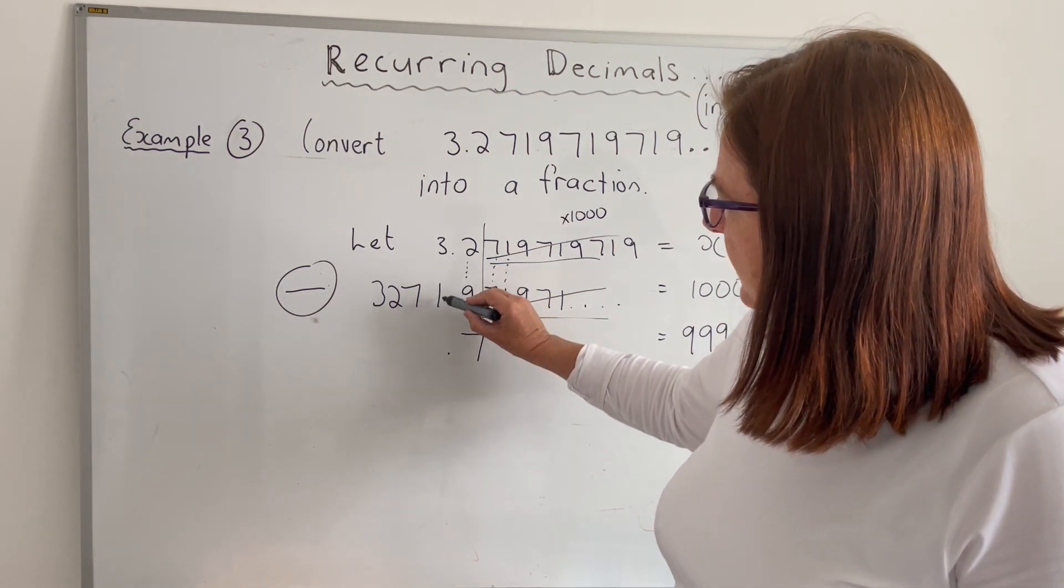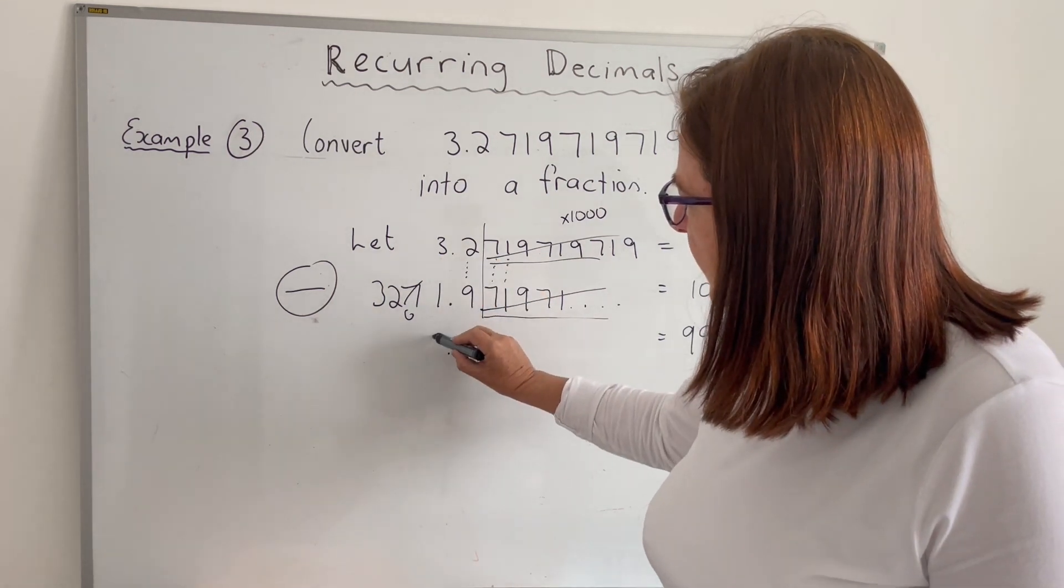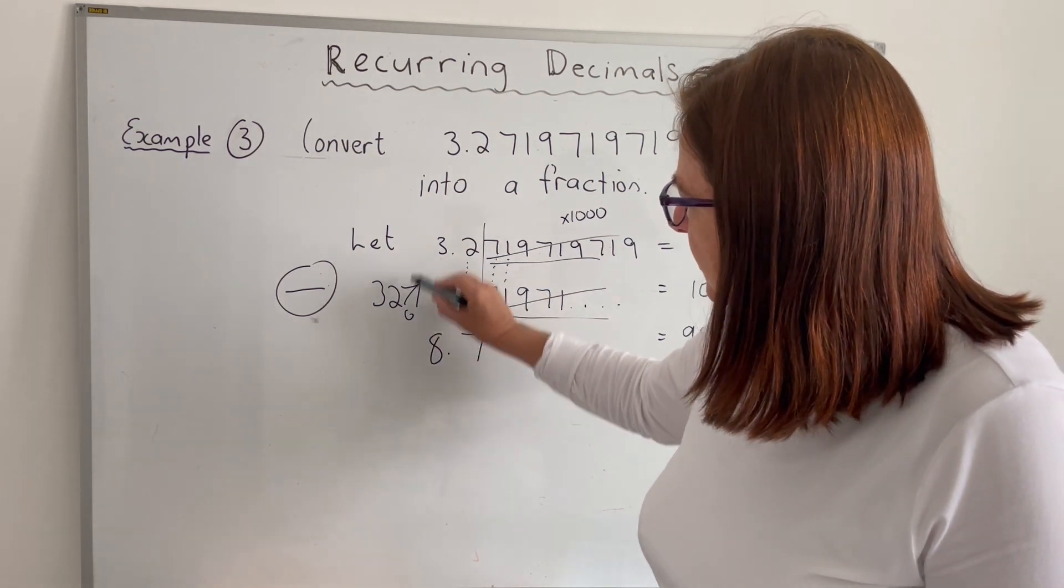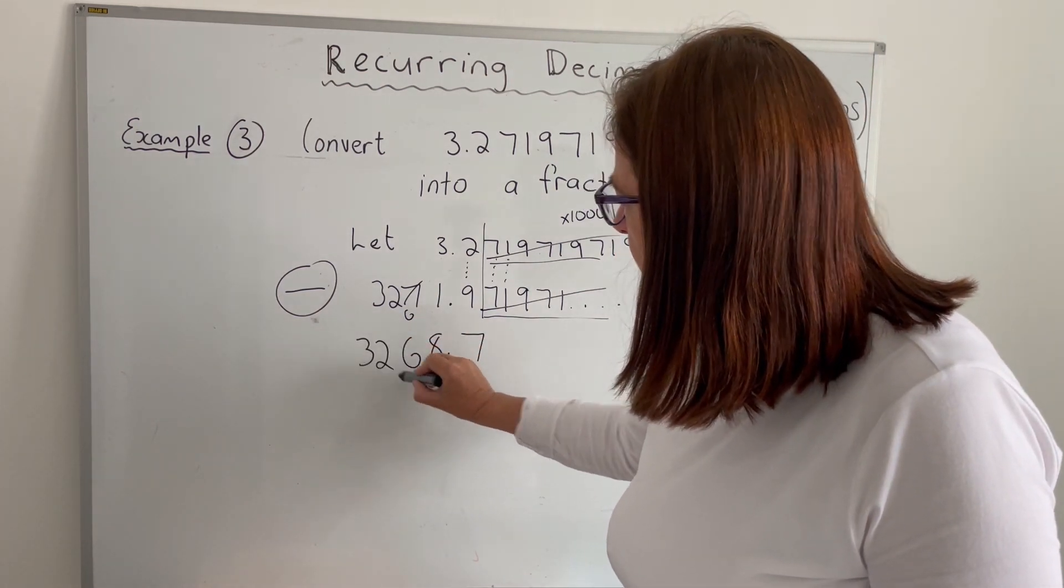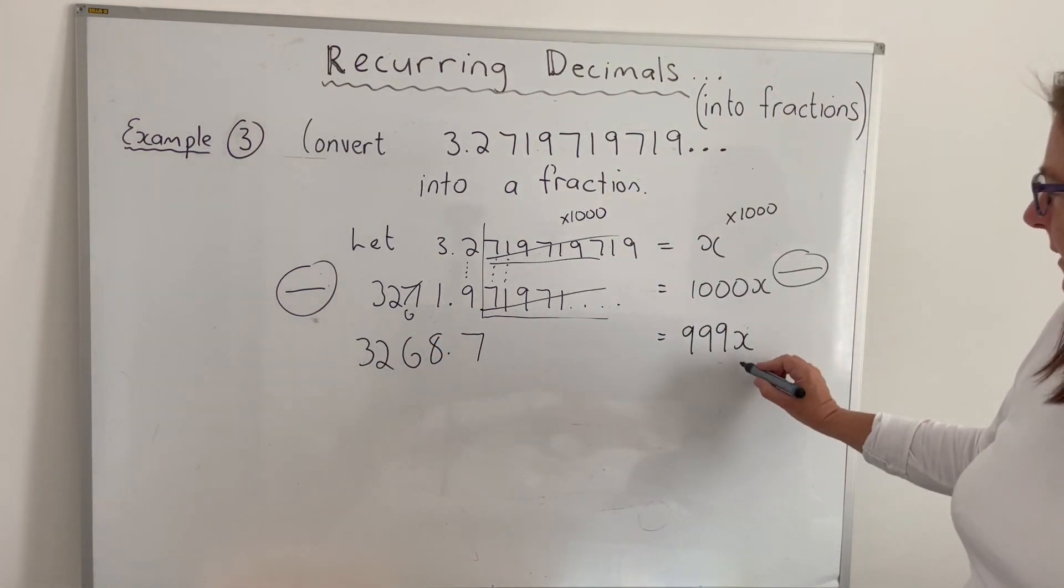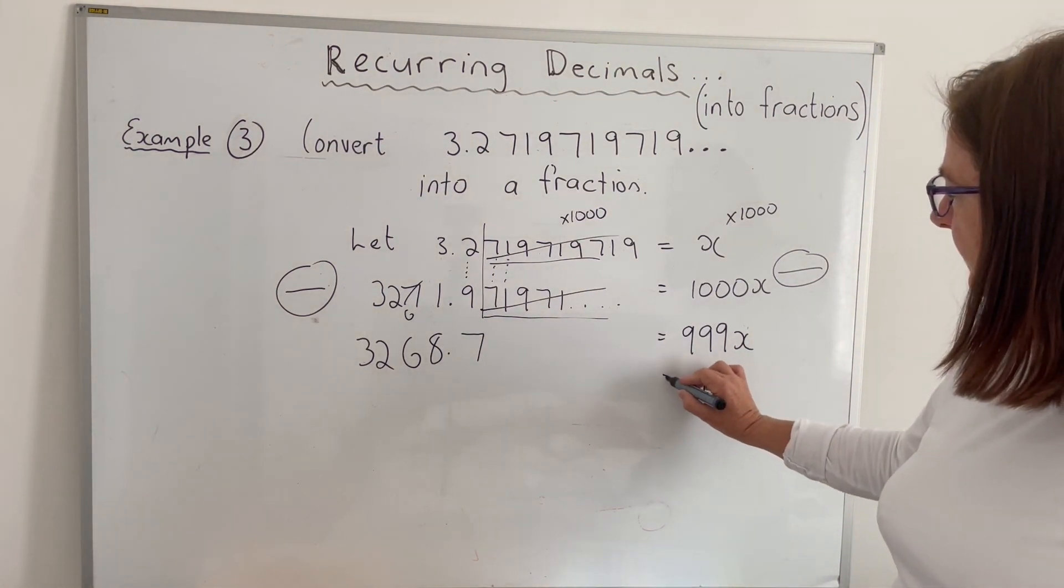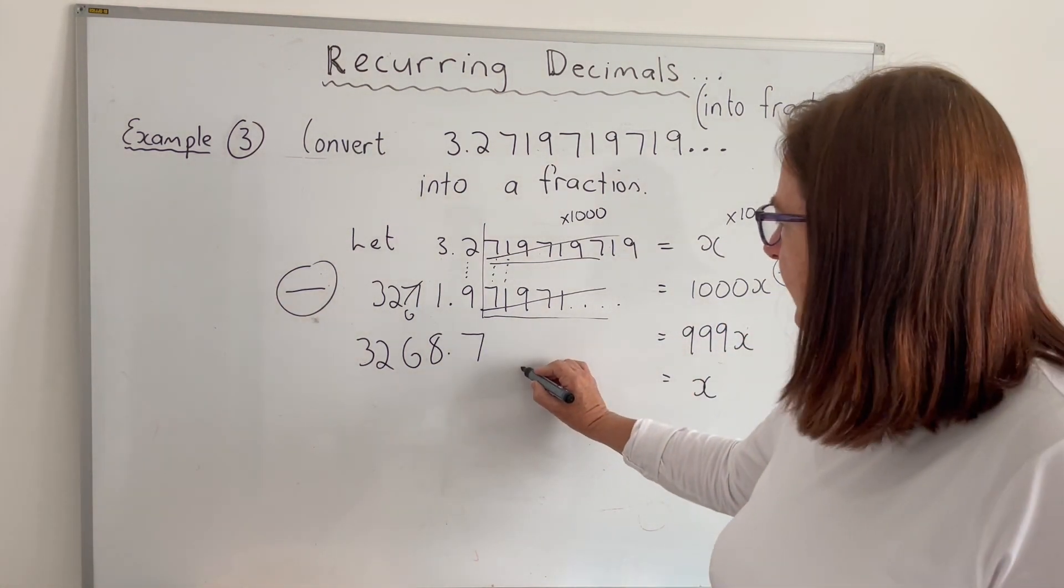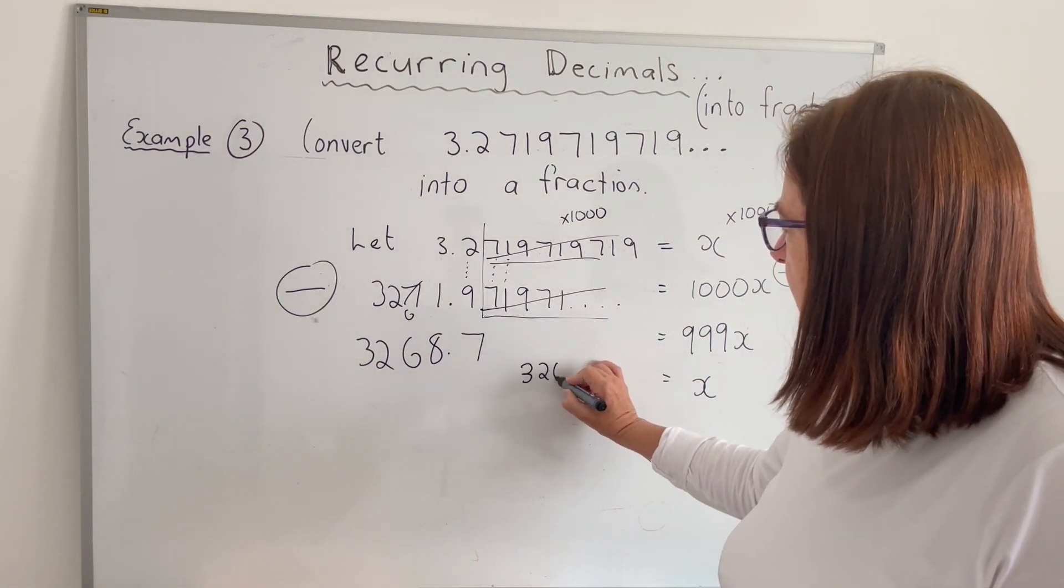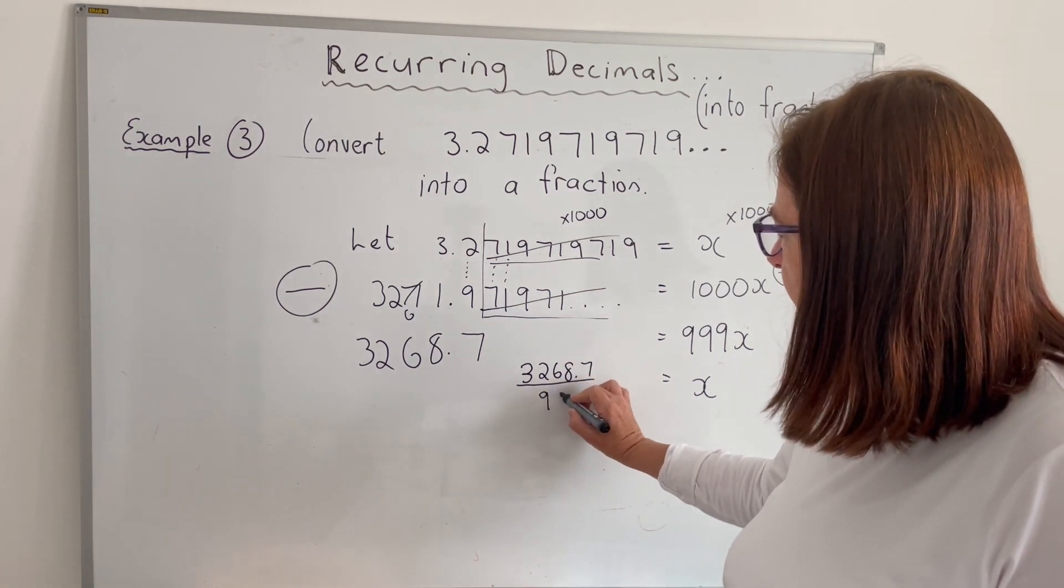And what I'm left with here is 9 take away 2 is going to be 7. We have to borrow, 11 take away 3 is going to be 8. 6 take away 0 is going to be 6. And then we've got 3, 2. So almost the final step to solve for x. I'm going to divide both sides by 999. So I'm going to get 3268.7 divided by 999.